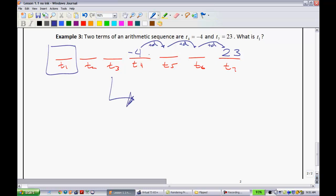So, from this information, what can I say? I can say that I know to get to t sub 7, or the seventh term, I have to take t4, the term I know, and add how many common differences? Three of them. But we know what the seventh term is and the fourth term is. The seventh term is 23. Sub that in. We know the fourth term is negative 4.